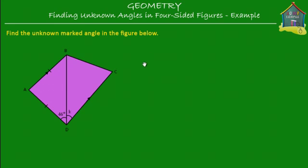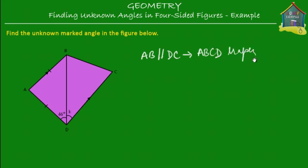In this case it's AB that's parallel to DC, and therefore the four-sided figure which is ABCD is a trapezium. So ABCD is a trapezium in which AB is parallel to DC.